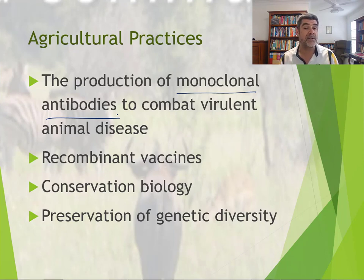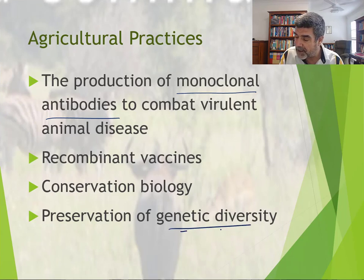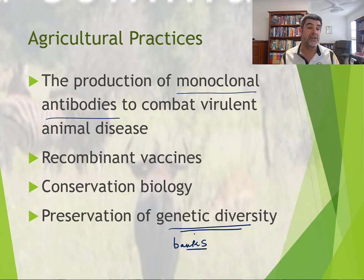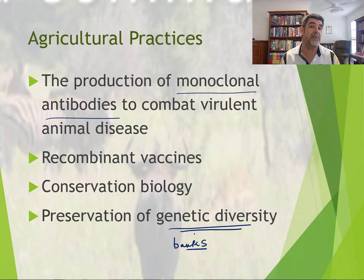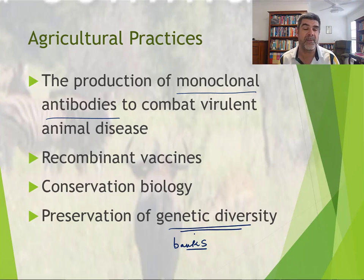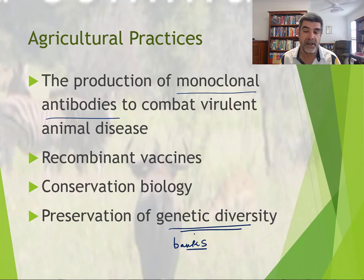Other agricultural practices that include genetic techniques include recombinant vaccines, conservation biology, and the preservation of genetic diversity — particularly through gene banks and seed banks. These store genetic information on particular types of organisms in order to try and maintain and preserve genes within the wider gene pool, especially in species where there may be some endangerment or reduction in species diversity.